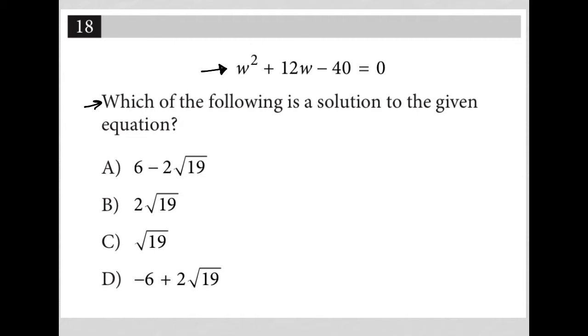I'm noticing that in every answer choice, there's a radical. So typically when I'm trying to simplify a quadratic, I look to see if there are two factors of the third term, in this case negative 40, that multiply to equal the second term, positive 12.